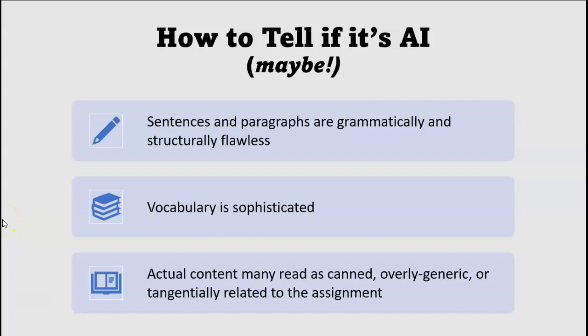Here are the red flags to look for to check if a student's paper is AI generated. First, sentences and paragraphs are going to be grammatically and structurally flawless. Even educated adults have trouble creating sentences and paragraphs quite that perfect. So if there are errors, you can be pretty sure it's not AI, or the student has made significant revisions and you won't be able to tell.